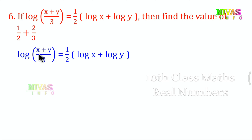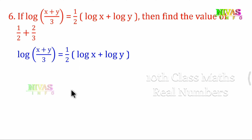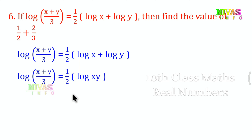Here we have log x plus log y. If we get the value of 2 log x plus log y, we combine them. The algorithm: we find out the value. Log (x plus y) by 3 is equal to 1 by 2 log xy, which means log of (x plus y) by 3 equals log of (xy) to the power 1 by 2.